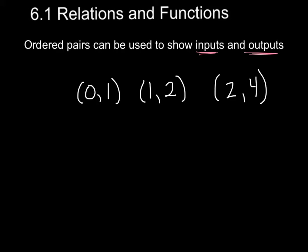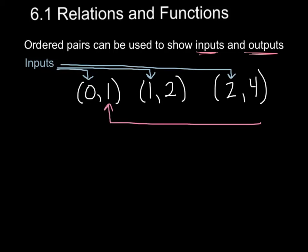Your inputs, which later on you're going to learn is called domain, are your x values. So the 0, 1, and 2 are our inputs. The 1, 2, and 4 are called our outputs. So the x values are your inputs, and your y values are called your outputs.